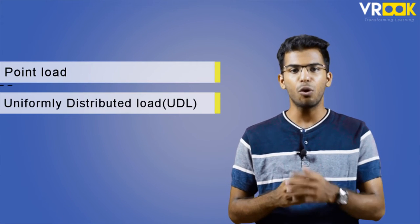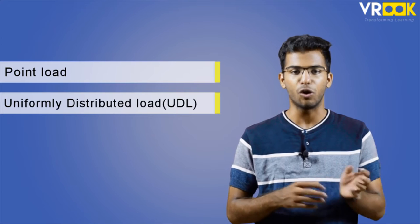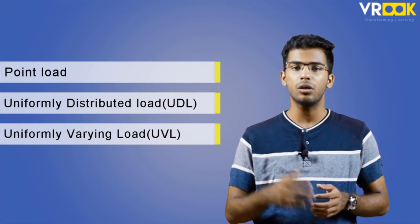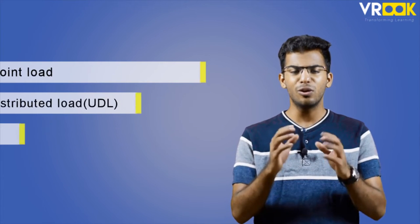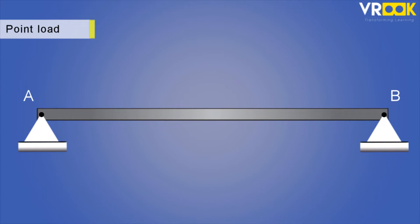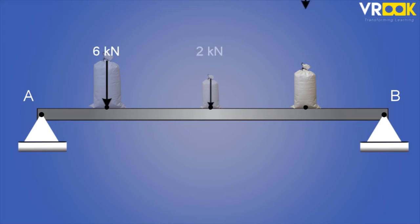Point load, uniformly distributed load or UDL, and uniformly varying load or UVL. Now let's look at the point load. A point load is where the concentration of the entire load is acting at a small point on the beam. The entire effect of the load is concentrated at that point. A sandbag placed at a particular location on the beam is a point load.